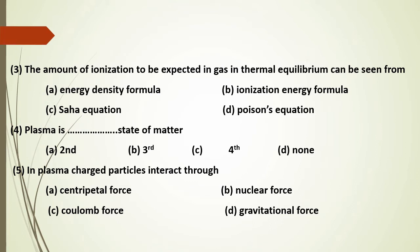The amount of ionization to be expected in a gas in thermodynamic equilibrium can be determined from the energy density formula, ionization energy formula, Saha equation, or Poisson's equation. The answer is the Saha equation, which is used to calculate the amount of ionization.